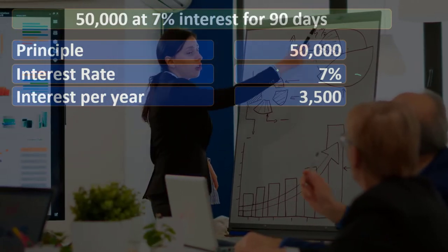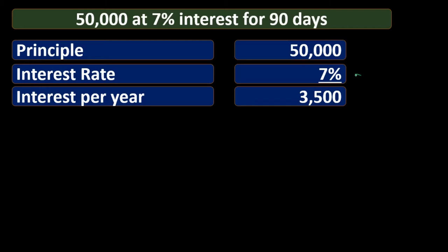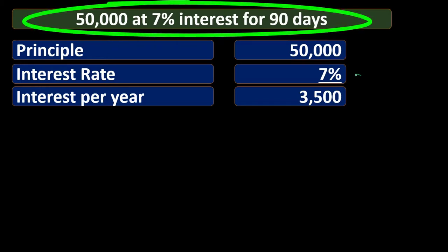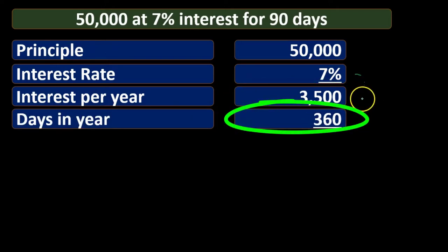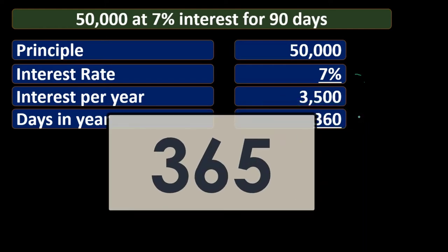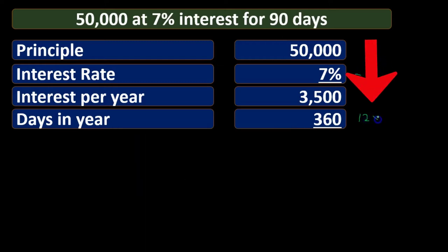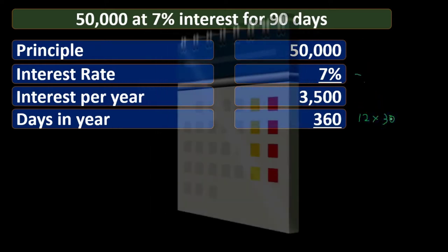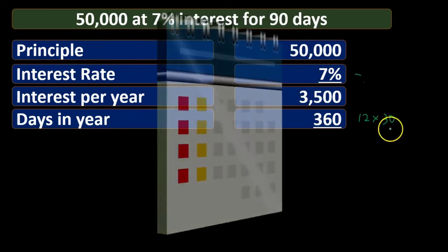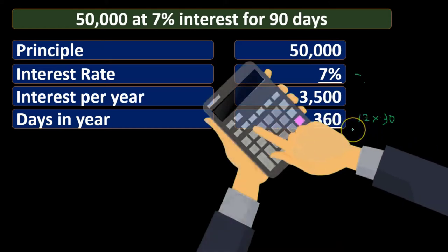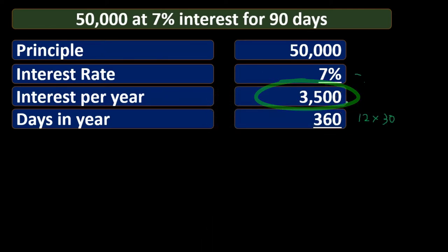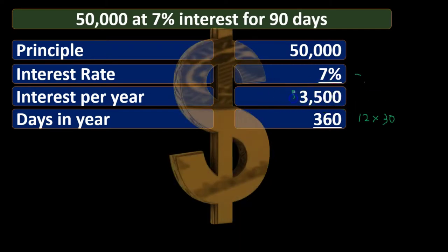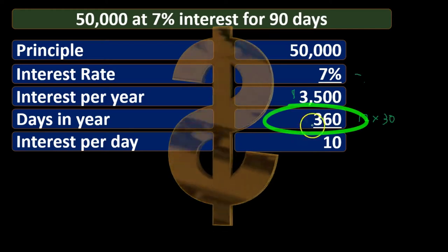Within any problem or discussion, interest typically means per year — similar to saying someone makes $70,000, meaning per year even if not stated. Next, we take that $3,500 and ask how many days are in a year. For this calculation we use 360 rather than 365, based on the assumption of 12 months times 30 days per month. That gives us an even 360 for our simple interest calculation.